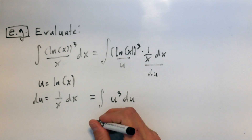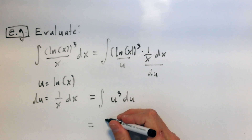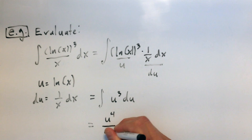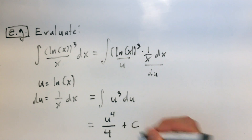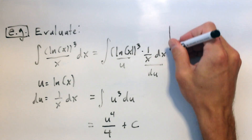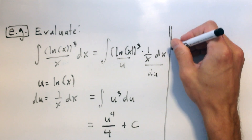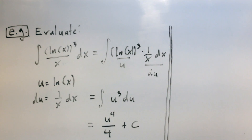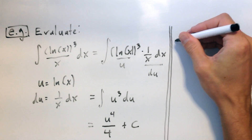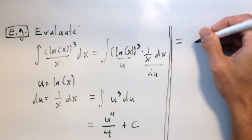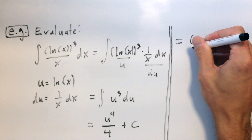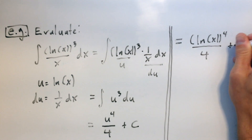Now I can just apply the power rule, which says increase the power by 1. I get u to the fourth power divided by the new power, which is 4. And for good form, I put a plus c. Finally, we want to get rid of the variable u, because u is not our variable from the original problem. x is our original variable and u is natural log of x, so this gives us the natural log of x to the fourth power divided by 4, plus c.